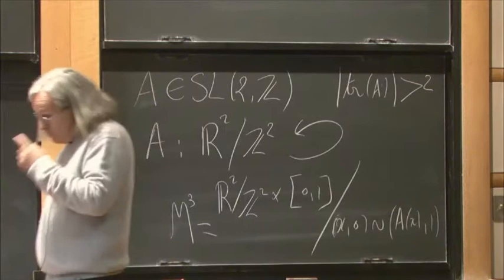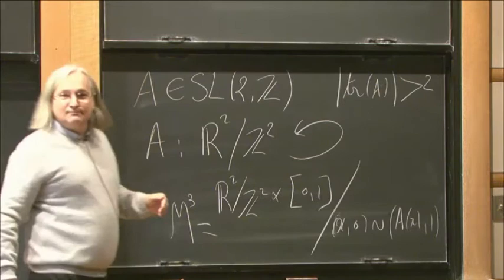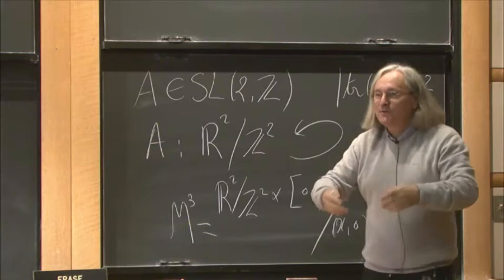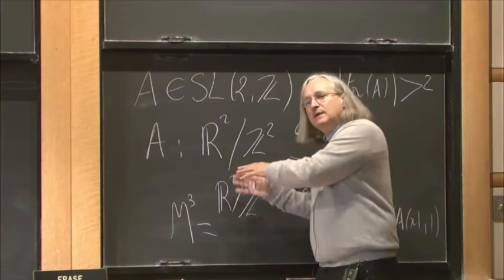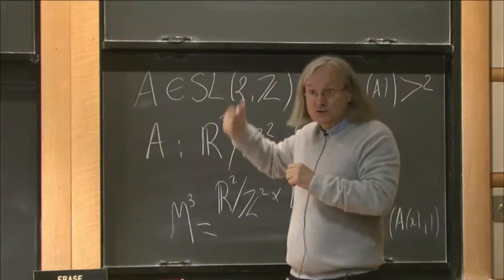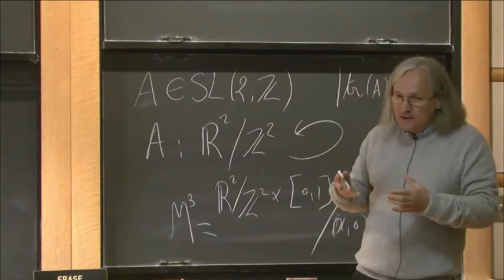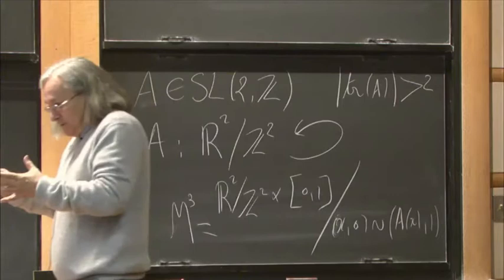If you look in Anosov's book, you only have these two examples. When I was a student, my dream was to show that these are the only examples, and I worked hard — unsuccessfully. Some people proved weak results: for example, if the fundamental group of the 3-manifold is solvable you can show it must be of that form. I also proved that if the 3-manifold is a circle bundle, just like the unit tangent bundle, then the flow has to be the geodesic flow.